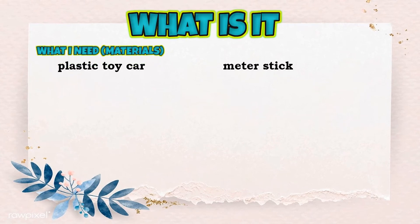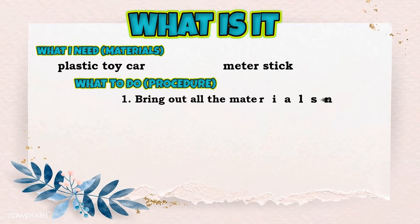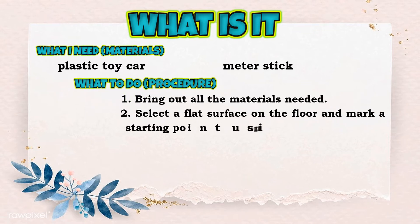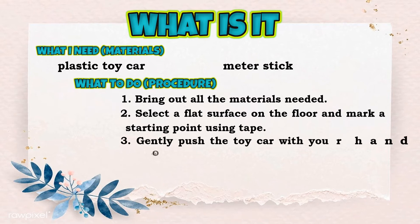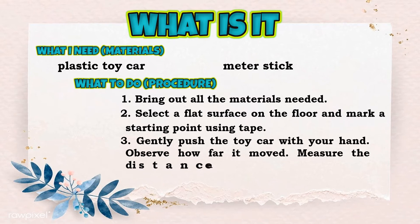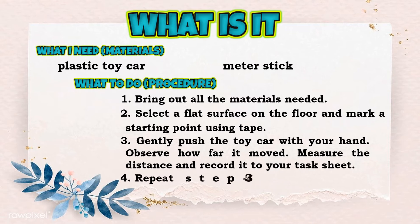Materials needed: a plastic toy car and a meter stick. Procedure: 1. Bring out all the materials needed. 2. Select a flat surface on the floor and mark a starting point using tape. 3. Gently push the toy car with your hand, observe how far it moved, measure the distance, and record it on your task sheet. 4. Repeat step 3 for 5 more times.